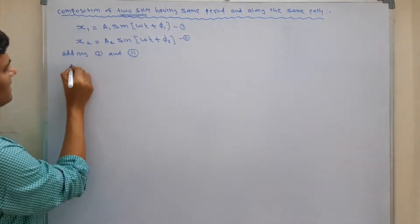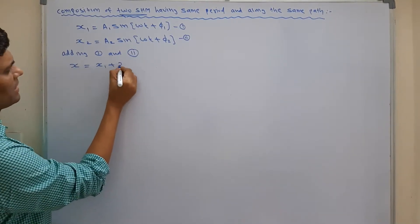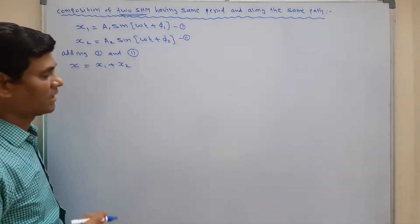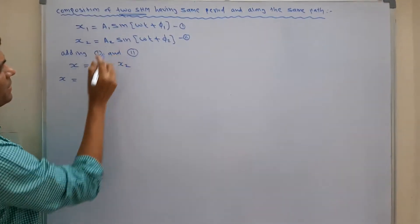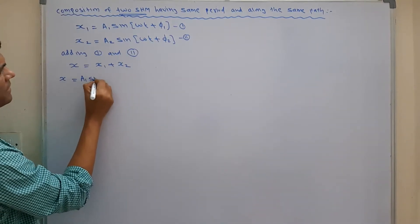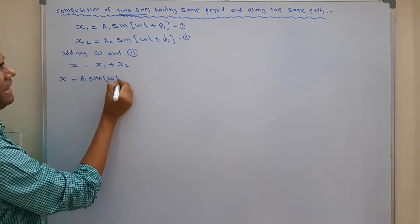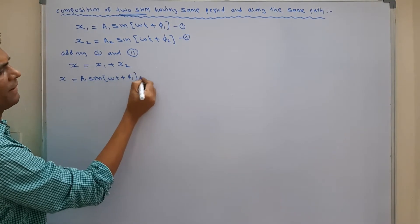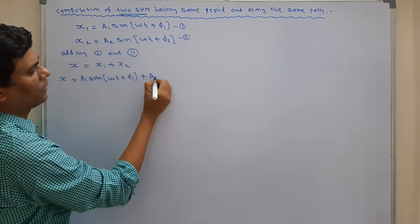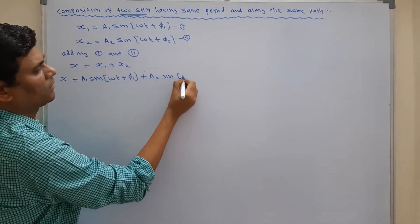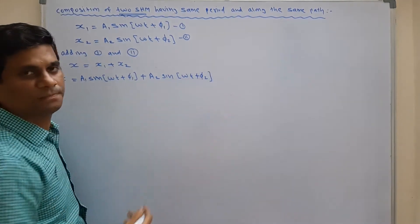Adding equations 1 and 2, the resultant SHM X equals X1 plus X2. So X equals A1 sine omega t plus phi 1, plus A2 sine omega t plus phi 2.